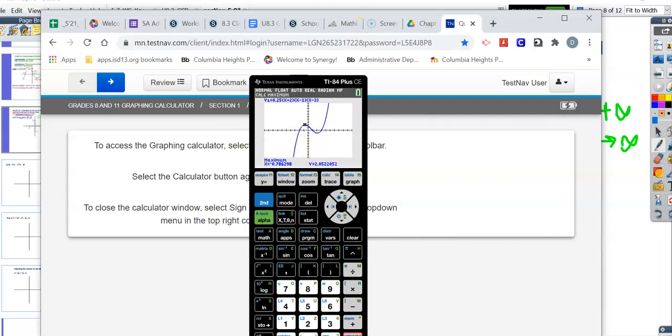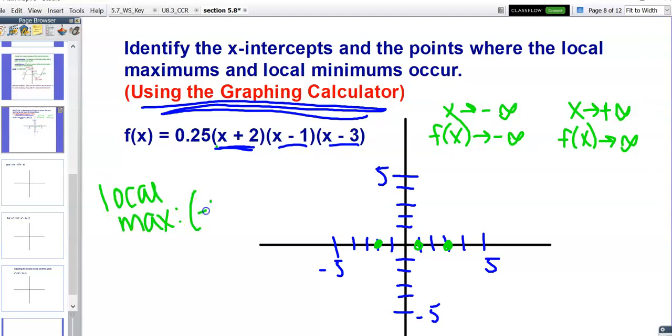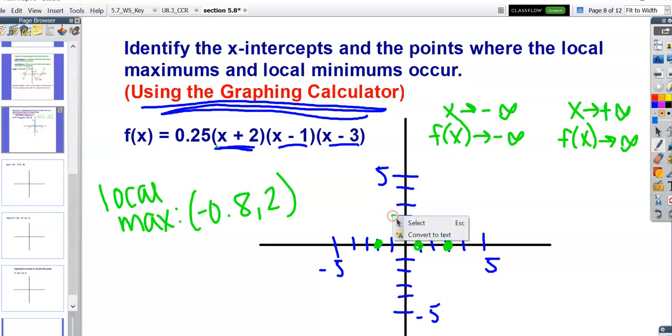We can estimate that the maximum is about negative 0.8, 2. So the coordinates would be about negative 0.8, 2. We can go ahead and plot that point.